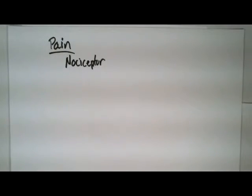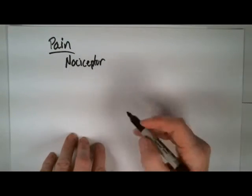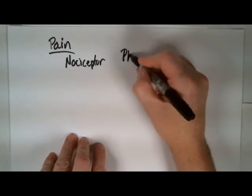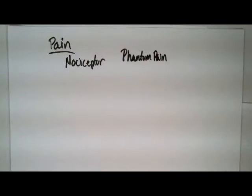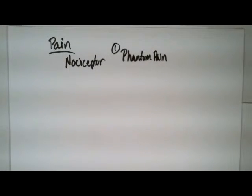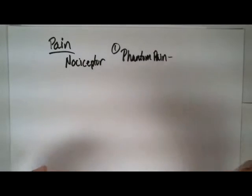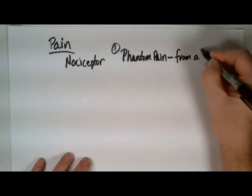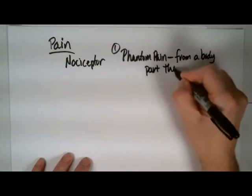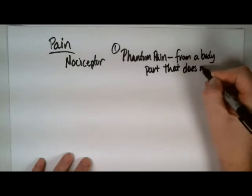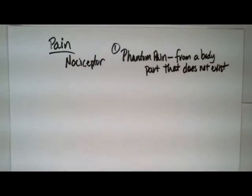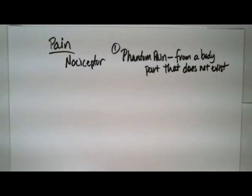Let's talk about four different types of pain. First is phantom pain. Phantom pain is a pain that you perceive from a body part that doesn't exist anymore. For example, if something happens and your foot is damaged and removed, you no longer have a foot, but you still perceive pain from that foot. That's phantom — or ghost — pain; it's not there.